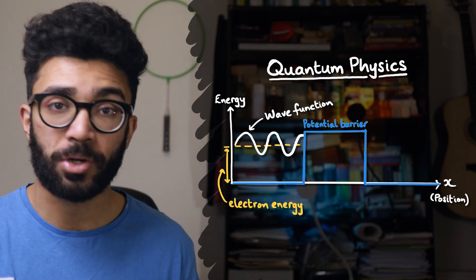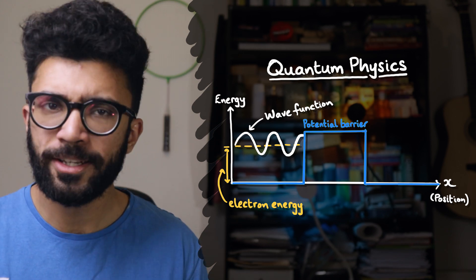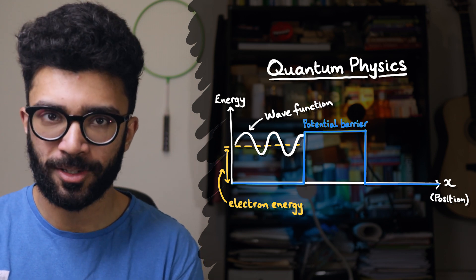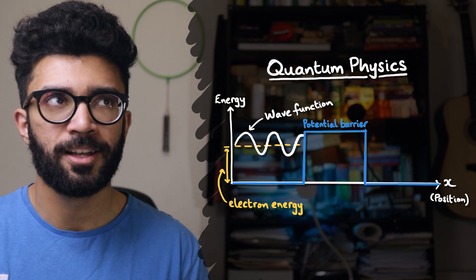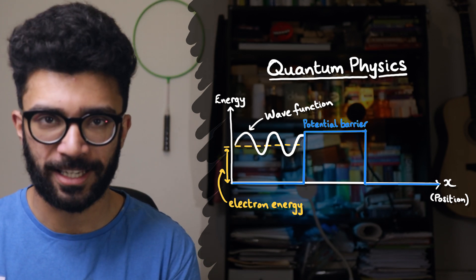we realized that an electron does not have a well-defined position until we actually measure it. All we knew about the electron is the probability with which we could find that electron in certain locations along the horizontal axis. All of that information was encoded in what's known as the wave function of the electron.